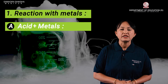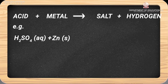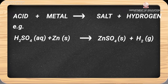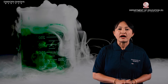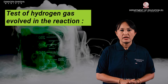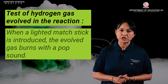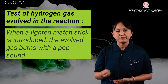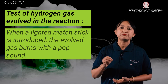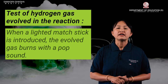Let's take an example: sulfuric acid with the formula H₂SO₄. When this sulfuric acid reacts with zinc granules, there will be formation of zinc sulfate salt along with hydrogen gas. How can we test the presence of hydrogen gas? Hydrogen gas is a burning gas — when it is in contact with a flame, a pop sound is produced. This confirms the presence of hydrogen gas.